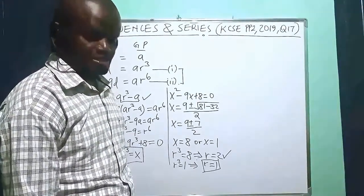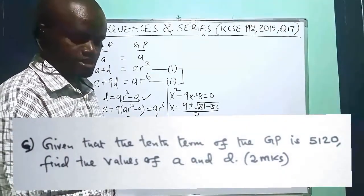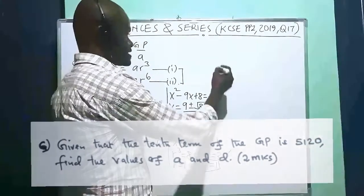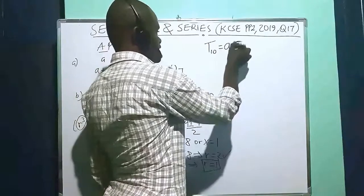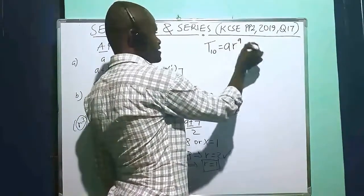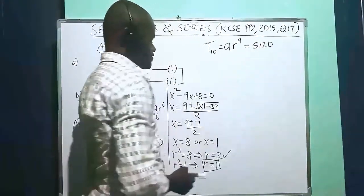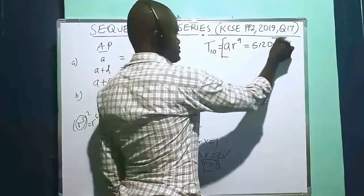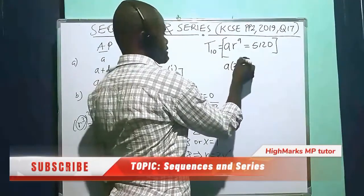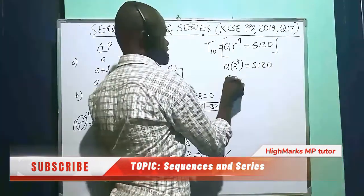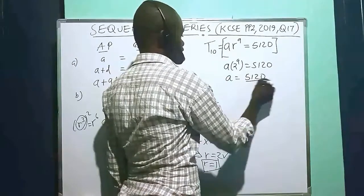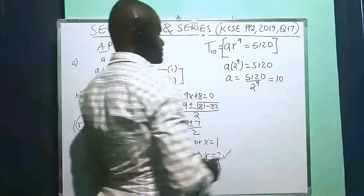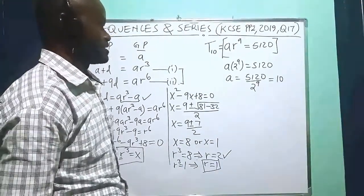For part C, given that the tenth term of the GP is 5,120, find the values of A and D. The tenth term of the GP is A·R^(10−1) = A·R^9, and this equals 5,120. Since R equals 2, we have A times 2^9 equals 5,120. Therefore A equals 5,120 divided by 2^9, and using a calculator, A equals 10.